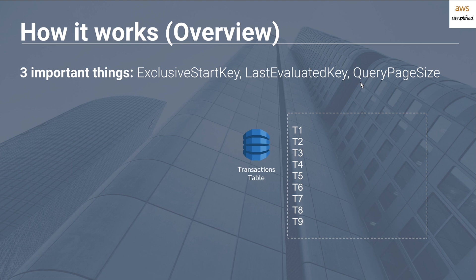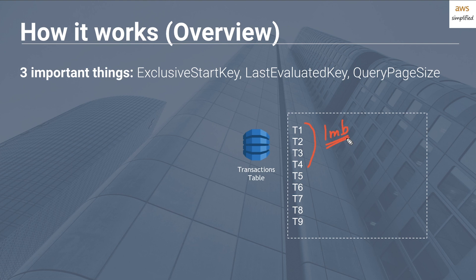By default, if you query DynamoDB without any pagination parameters, DynamoDB will try to query one megabyte worth of data. For example, assume T1 through T4 is one megabyte worth of data — by default you'll only get T1 through T4 back. A lot of people get stuck here wondering why they're not getting T5 through T9 as well. The answer is that there's a limit on the amount of data DynamoDB will pull — these are called pages, pages of one megabyte worth of data.